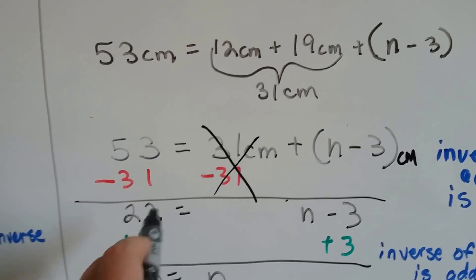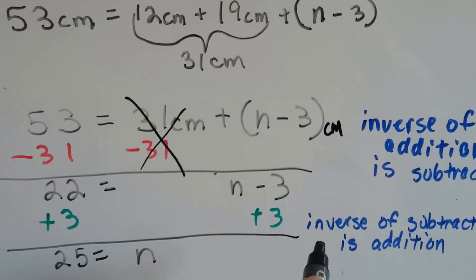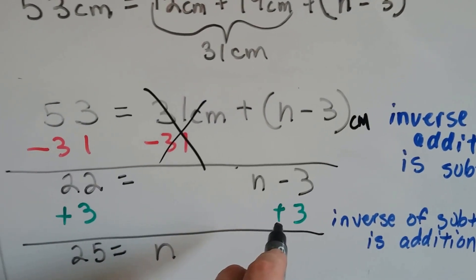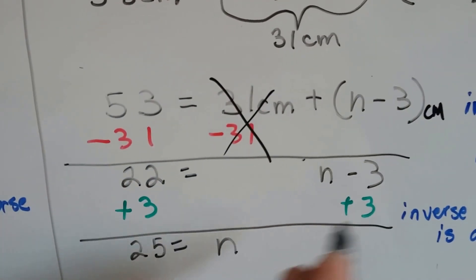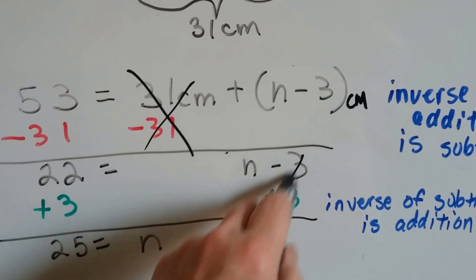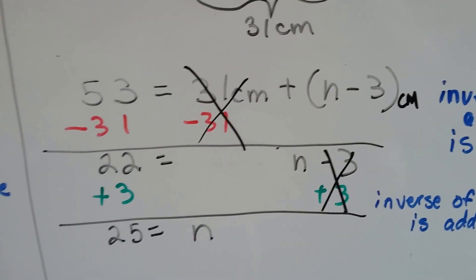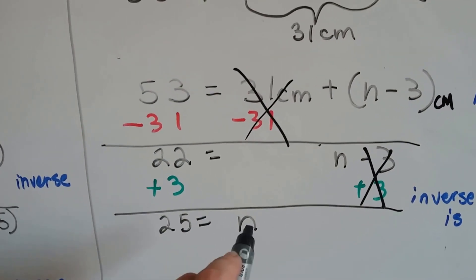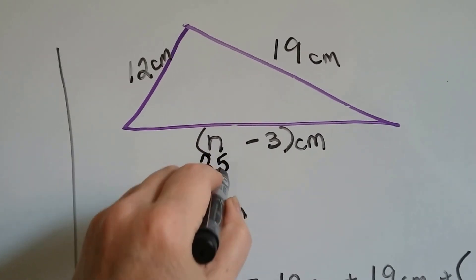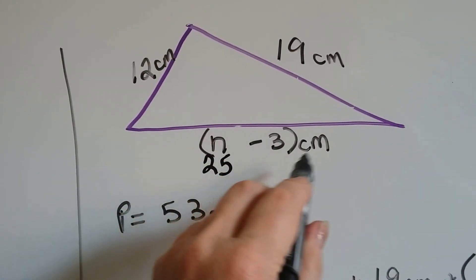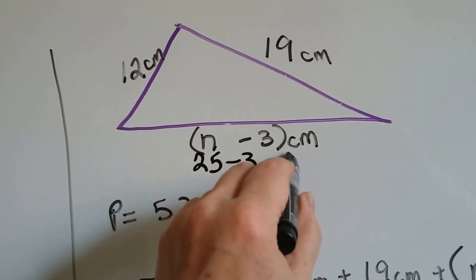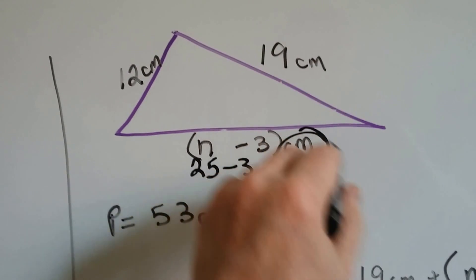Now we've got 22 is equal to n minus 3. The inverse of subtraction is addition, so we're going to add 3 to each side of the equal sign. 22 plus 3 is 25. The plus 3 and minus 3 made zero pairs and canceled out, so we've got 25 is equal to n. If 25 is equal to n, that means 25 minus 3 is what this side is — 25 minus 3 is 22, so this side is 22 centimeters.